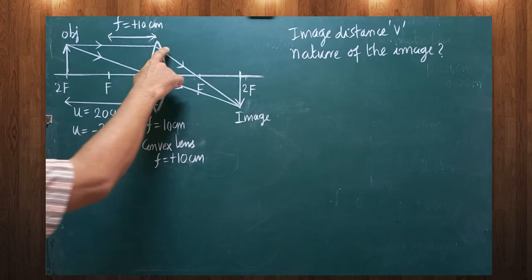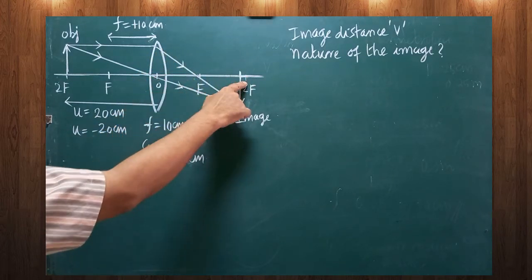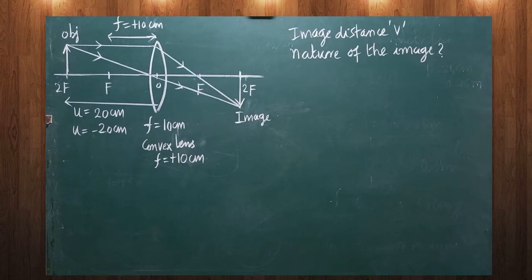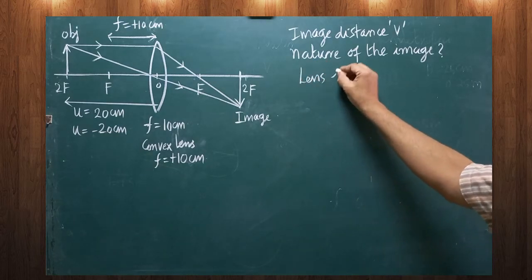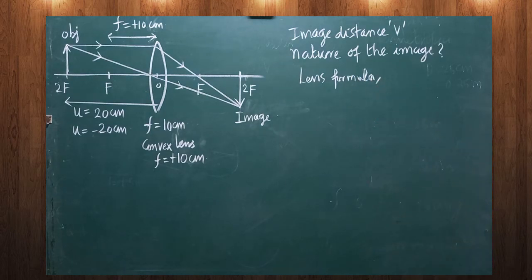We are asked to find the image distance — that is, the distance from the optic center up to the image. To find this, f is given and u is given, and we need to find the value of v. For that, the lens formula is required. The lens formula is a simple formula that allows us to find the value of v.